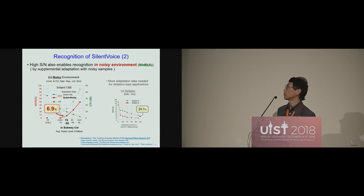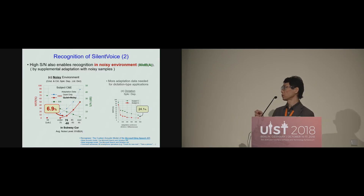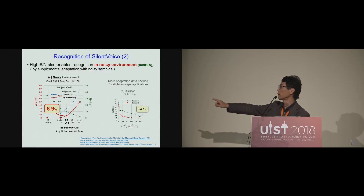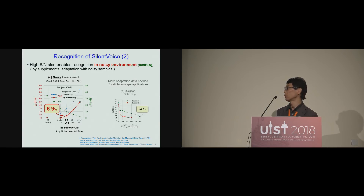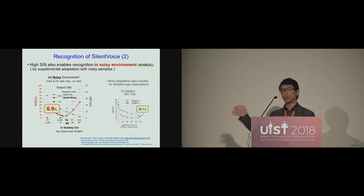This is the second recognition result in a noisy environment. Silent voice is very little sound, but the SNR ratio is very high — meaning it can be recognized in noisy conditions. We conducted an experiment in a subway car where the average noise level is about 80 decibels. The error rate is still kept at 6.9%, very low. That means we can use unnoticeable voice input not only in quiet spaces but also in noisy environments.